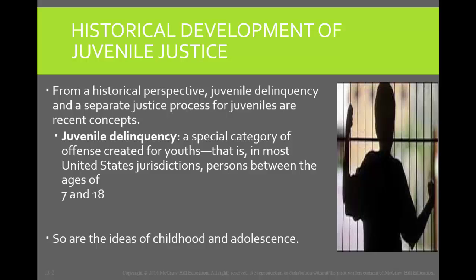The first was the apprenticeship system — the method by which middle and upper-class children were taught skilled trades by a master. Once the child learned all the skills they needed, they began to work in the trade and earn a respectable income. Secondly, colonists used the binding out system, the practice in which children were bound over to a master for care and education, but under the binding system masters were not required to teach youths a trade.